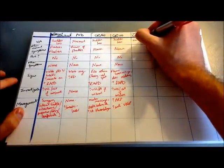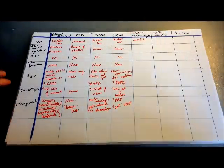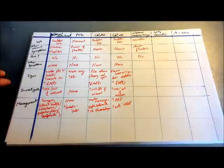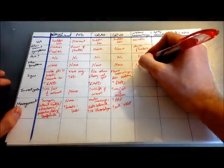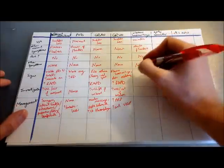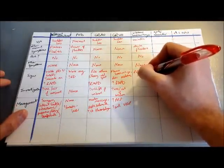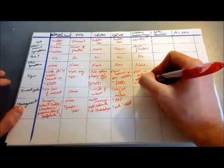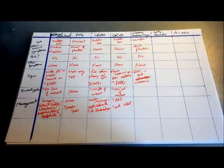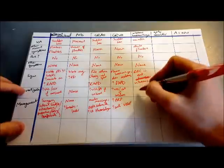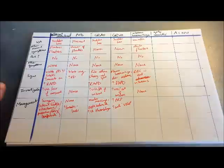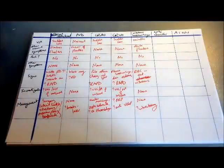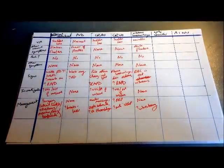Next up: vitreous haemorrhage. The visual acuity loss is variable depending on the extent of the bleed — a large bleed means more loss. Other visual symptoms might be some dark floaters in the vision, which is the blood within the vitreous humour. No pain, no systemic symptoms. On slit lamp examination, you might see red blood cells in the anterior vitreous humour. No investigations usually needed — it's usually a clinical diagnosis. Management is to reassure the patient, consider different positions for lying down, and if it doesn't clear or there's an associated retinal detachment, remove the vitreous humour with a vitrectomy.